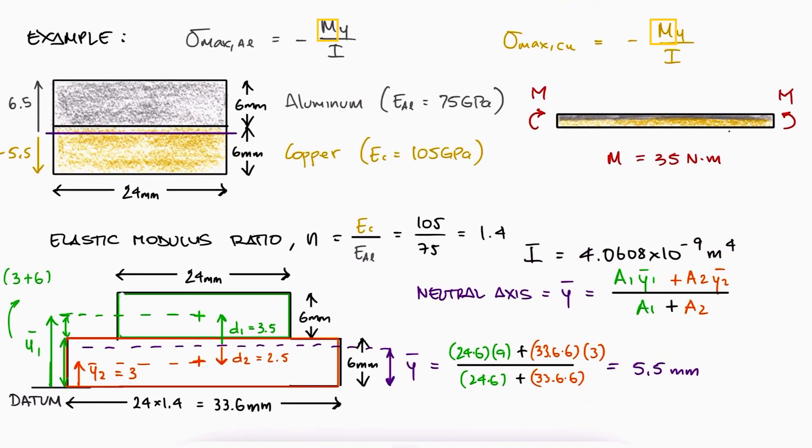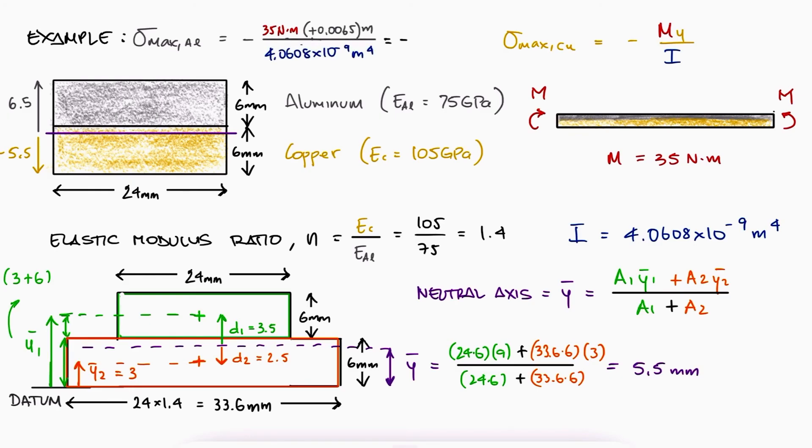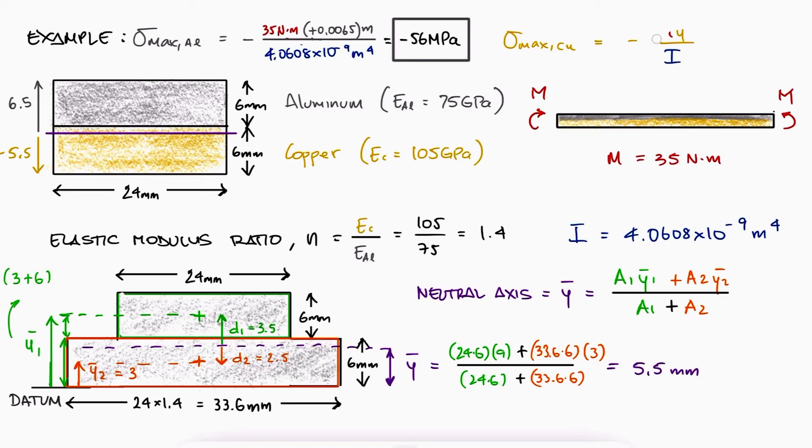With the moment, Y and I, we can directly substitute the values to find the maximum stress in the aluminum, since our transformed section is made of aluminum only. On the other hand, for the copper, the value from the expression minus MY over I would be the value for the stress if the material at the bottom, 5.5 millimeters below the neutral axis, was aluminum. But since it's copper, we find the actual stress in the copper if we multiply that expression by the elastic modulus ratio n.